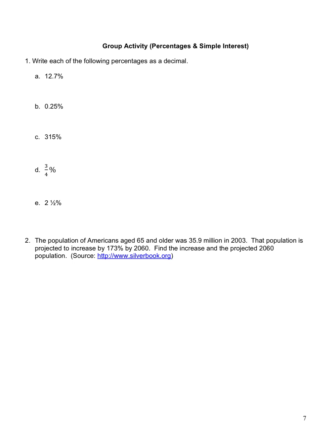These are the lesson activities for Math 117, Lesson 21. Number one, write each of the following percentages as a decimal.